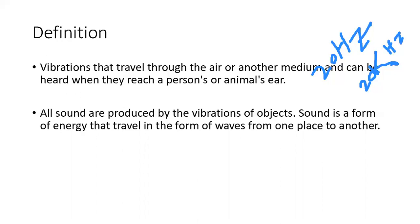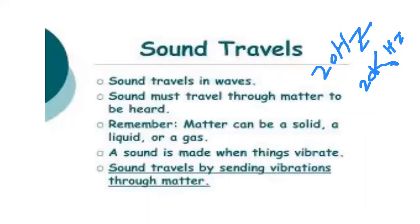Our voice results from the vibration of our vocal cords. Human heartbeats and vibration of other organs like lungs also produce sounds. Sound travels in waves. Sound must travel through a medium to be heard. The medium can be a solid, a liquid, or a gas. A sound is made when things vibrate. Sound travels by sending vibration through matter.